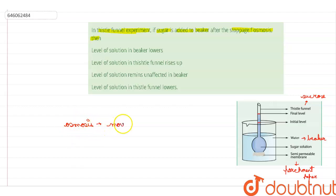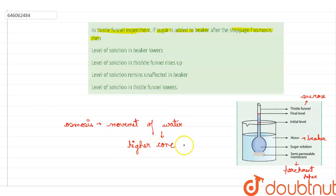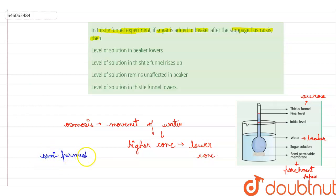Osmosis is the movement of water molecules from a region of higher concentration to a region of lower concentration, happening via a semi-permeable membrane, which only allows certain molecules to pass through easily.